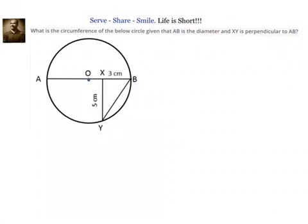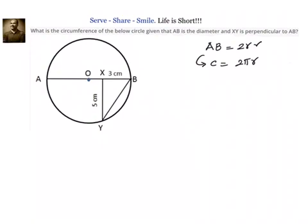So let us understand what is given to us. We know AB is the diameter, so let us say AB equal to 2 times R. And what we have to find out is the circumference, which is equal to 2πR. So if I know AB, then automatically we know circumference equal to 2R into π. Now we have to find out 2R. Given to us, AB is the diameter and XY is perpendicular to AB, so we can mark a 90 degrees angle here.